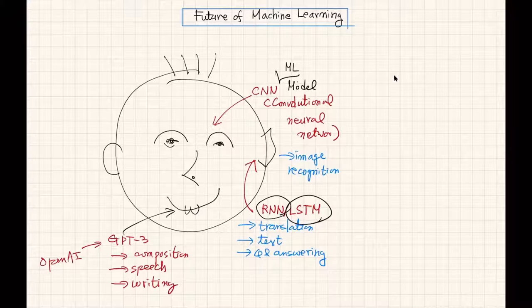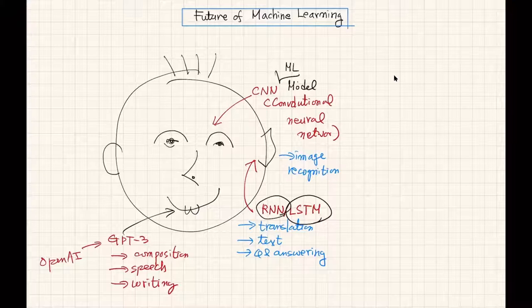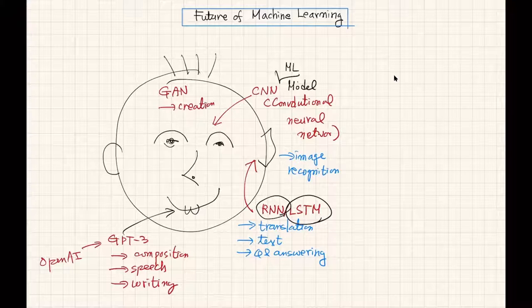These models — CNN, RNN, GPT-3 — represent our brain in some sense, and these are the machine learning models we're going to talk about very deeply this semester. There is also another model called GAN, which is useful for creative purposes. You can create art or music using a generative adversarial network.